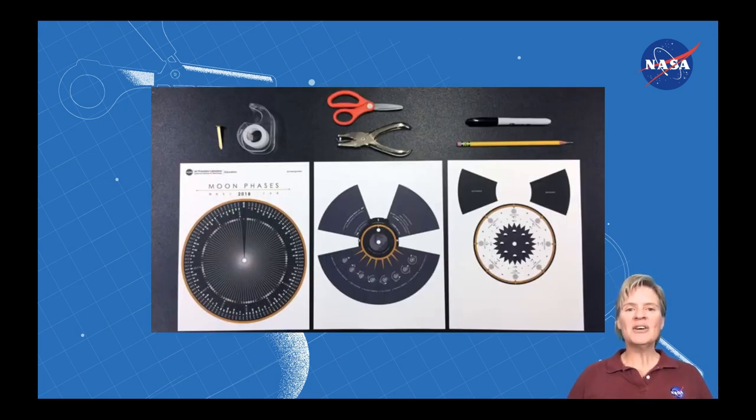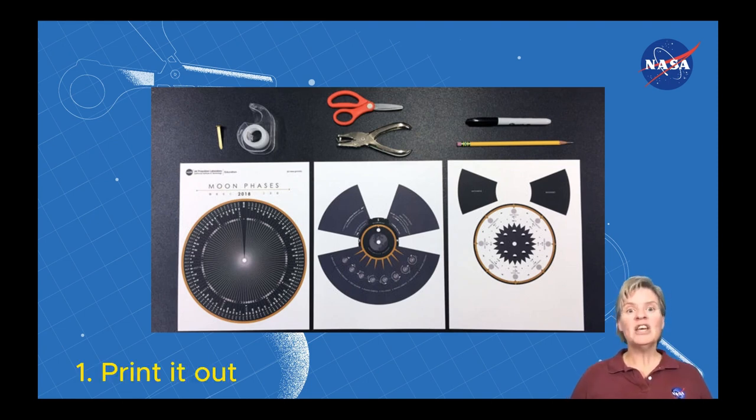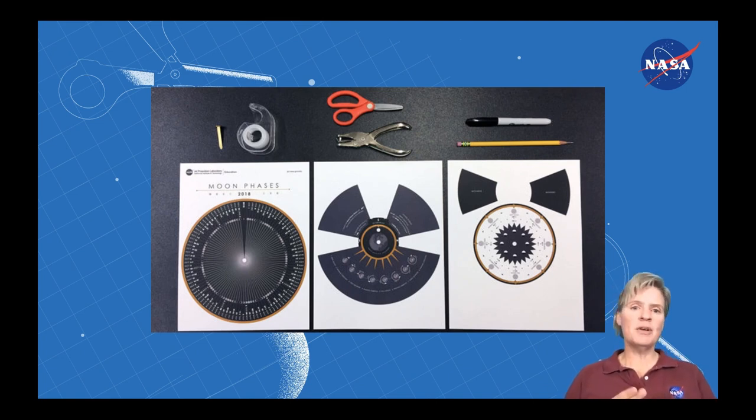To make the calendar, you're going to need to print out the template. The template is six pages. It's preferable to print those back to back if possible, and to use card stock or a heavier paper. But if you need to just use regular printer paper, not a problem, it'll still work. You'll also need a pair of scissors, a sharpened pencil, and a little bit of tape.